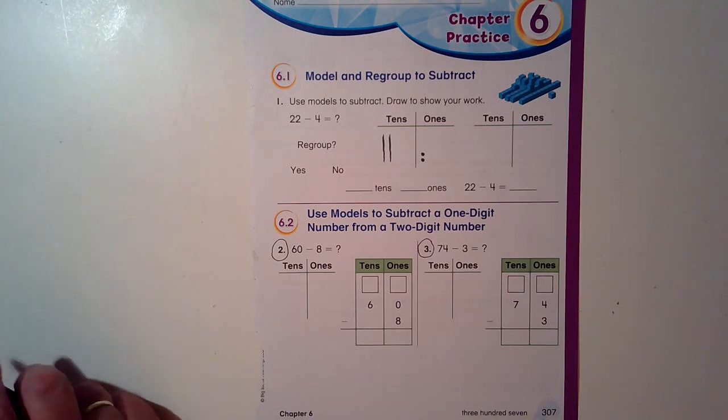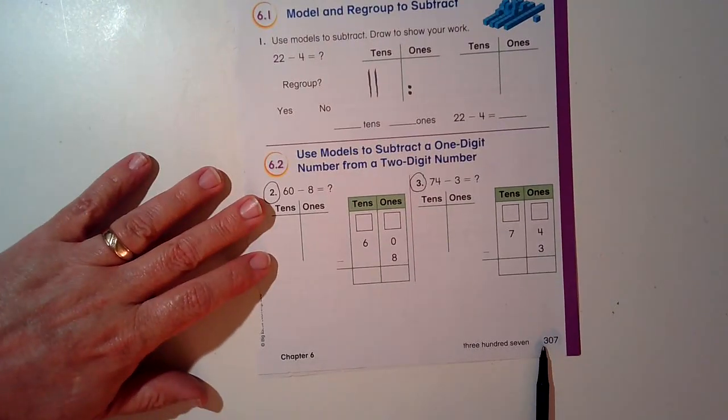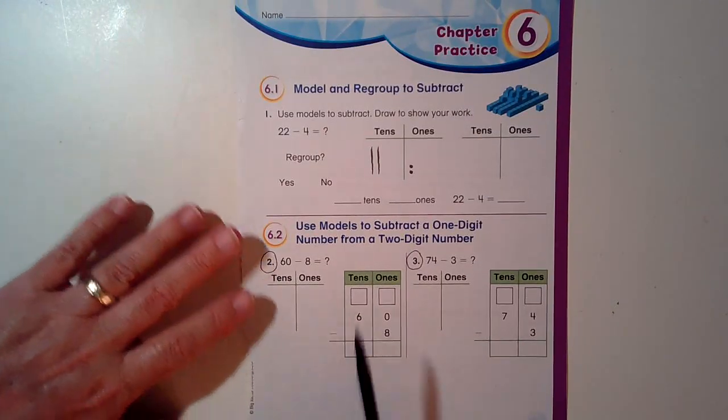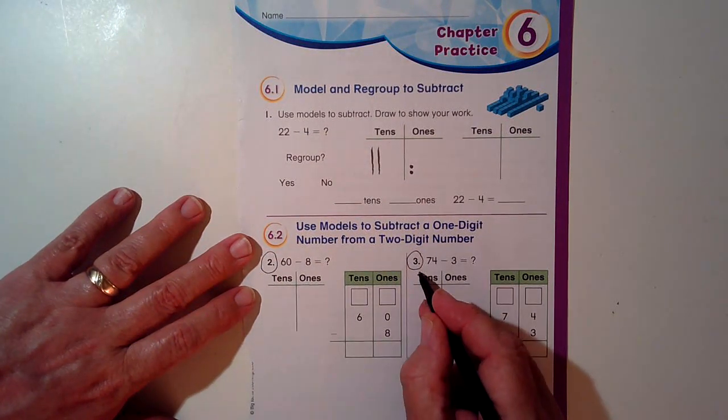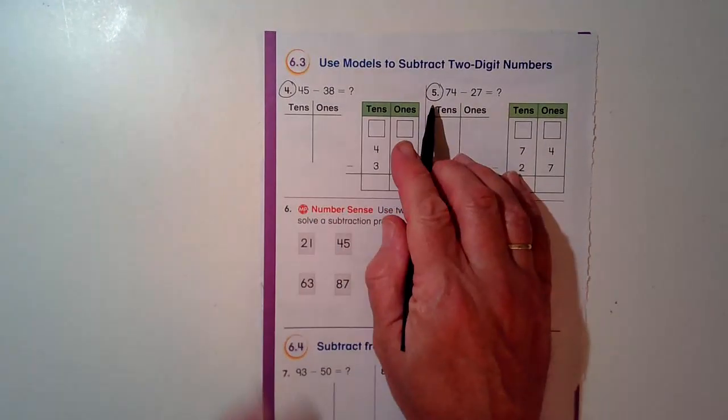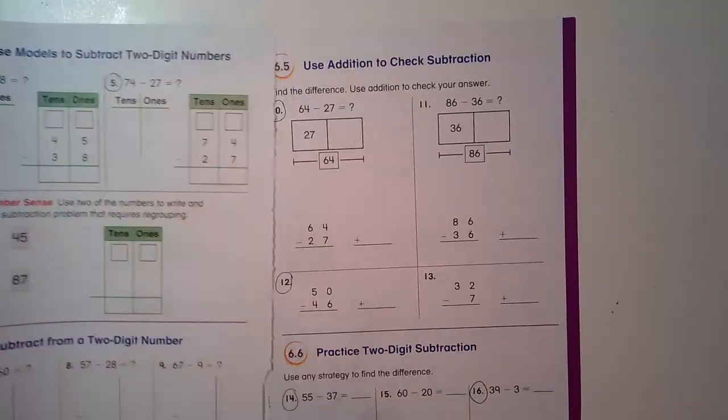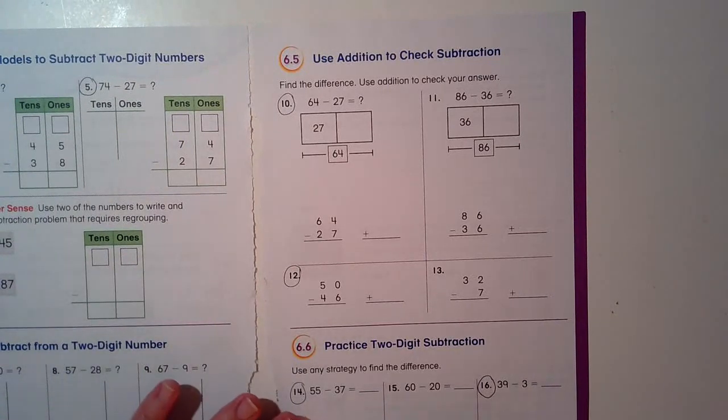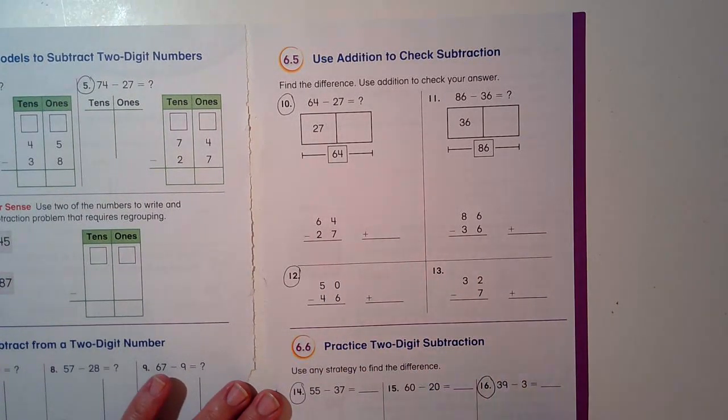For this page on page 307, I would like to see problems number 2, 3, 4, 5. On page 308, then turn the page to 309: 10, 12, 14, and 16.